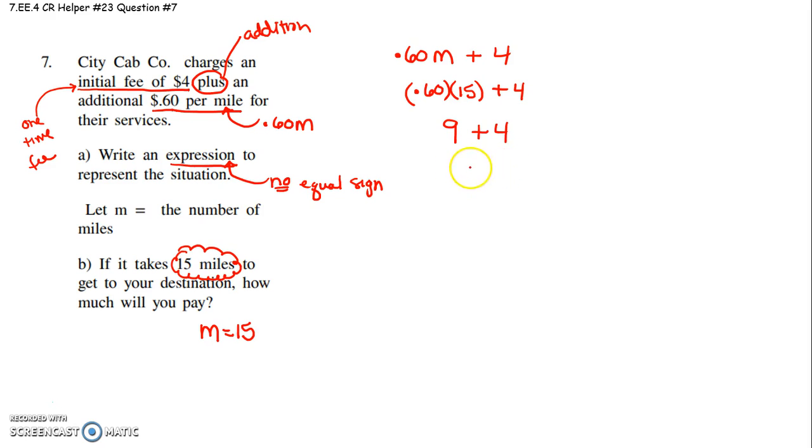Plus 4. 9 plus 4 is 13. It's $13 to get to your destination. I hope that helps.